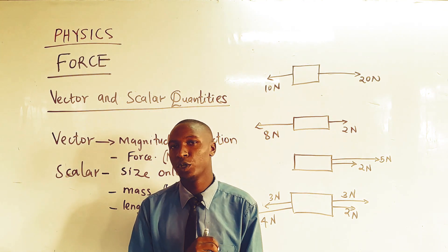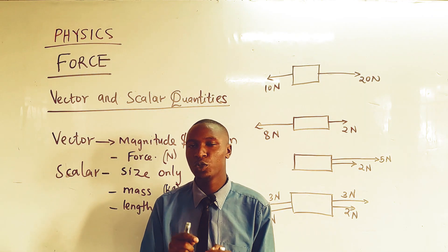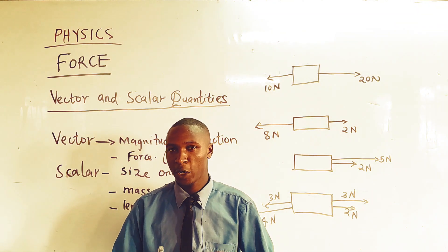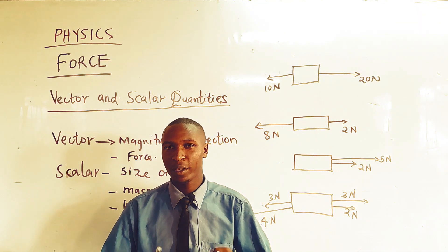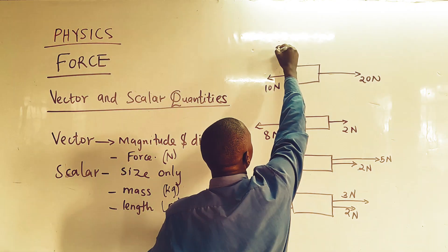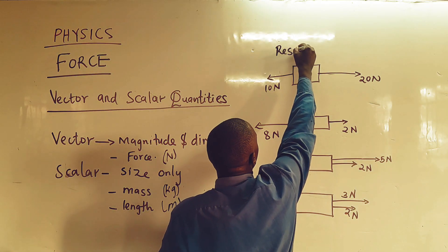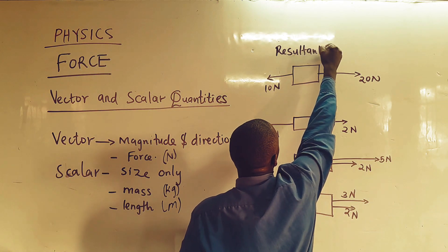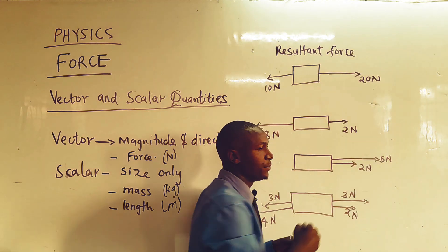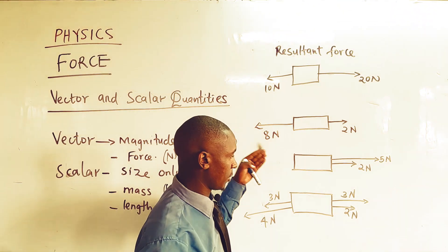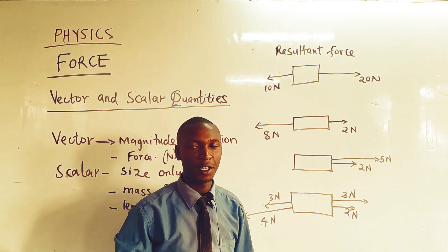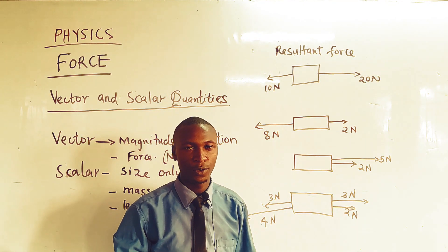In physics, we are going to notice that most of the things we deal with involve vector quantities. Let us now look at how to find what we call the resultant — the resultant force, or what we call the effective force. All the quantities you can see here are vector quantities.